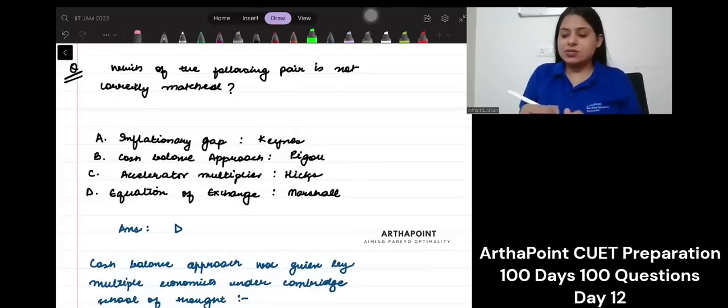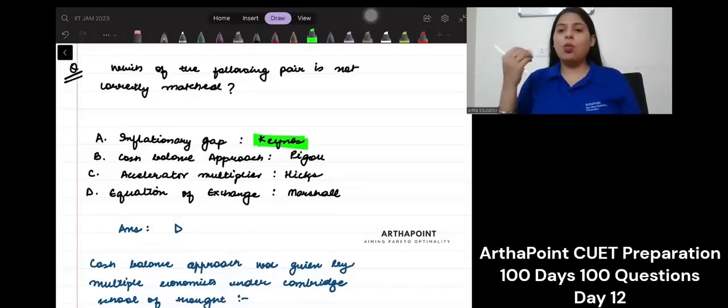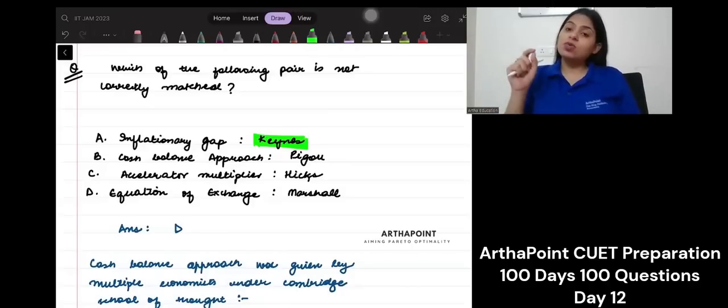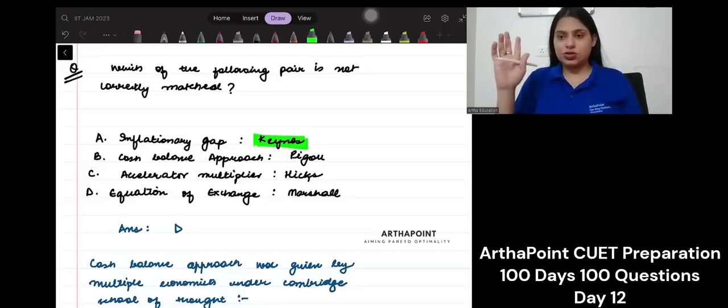Inflationary gap is simple. When we talk about Keynes, Keynes actually talked about why you cannot have always a full employment level. Why sometimes your economy will be in inflation and sometimes it would be in deflation.